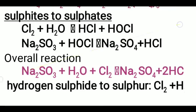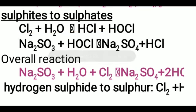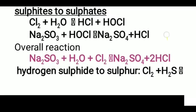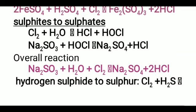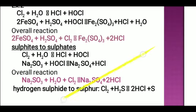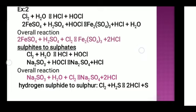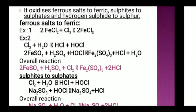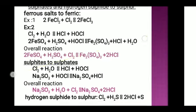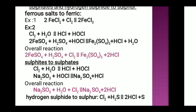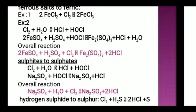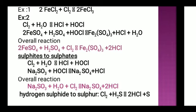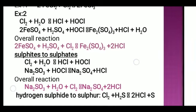For the Na2SO3 to Na2SO4 conversion, the only cancellation is HOCl on both sides getting cancelled. So the remaining overall reaction is: Na2SO3 plus H2O plus Cl2 gives Na2SO4 plus 2HCl — one HCl from the first reaction and one HCl from the second reaction, totalling 2HCl.